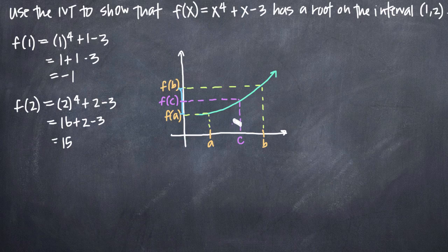So according to the intermediate value theorem, if I have a and f(a), and I have b and f(b), then since the function must assume every value in between f(a) and f(b), there has to be a point c here along the x-axis that's between a and b that gives me the value f(c).